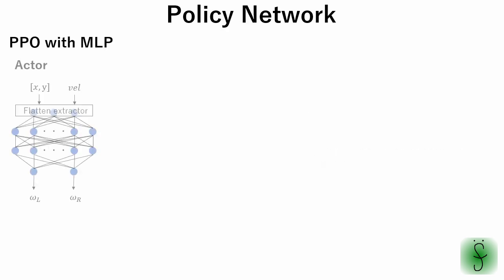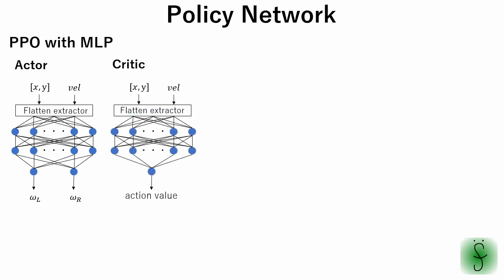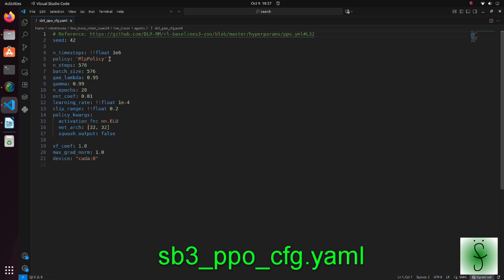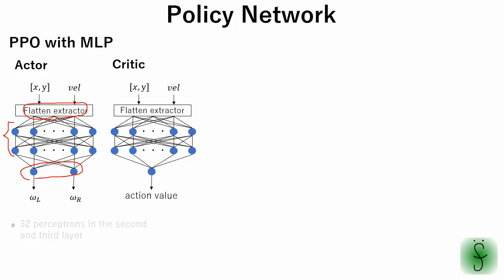Now let's see the network composition. When we use a multi-layer perceptron architecture, networks are relatively simple. They consist of a flatten extractor, two hidden layers, and an output layer. In the Stable Baselines 3 library, the flatten extractor layer is defined automatically when we set MLP policy. Then we have two hidden layers with 32 perceptrons in each. In the final layer,